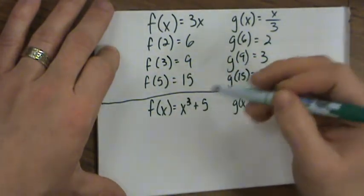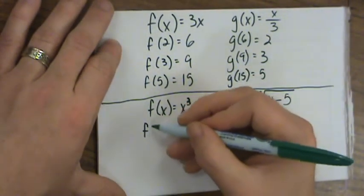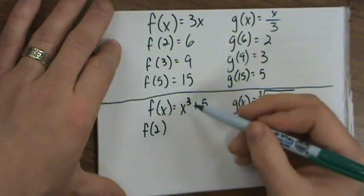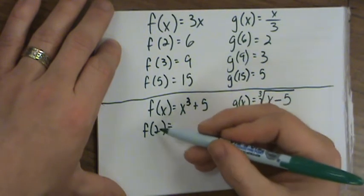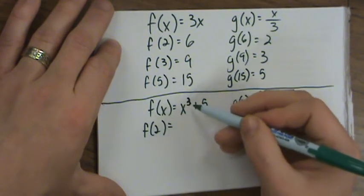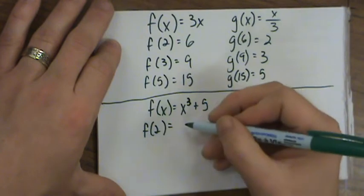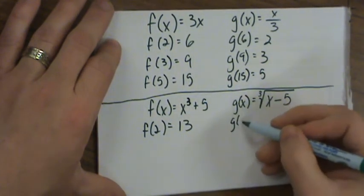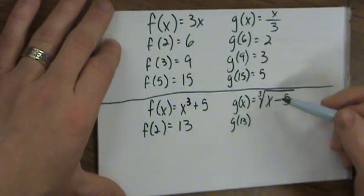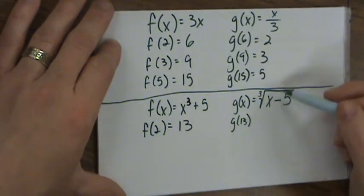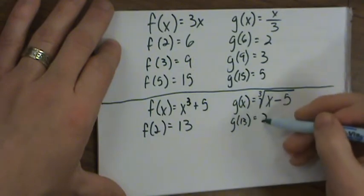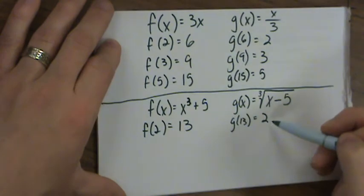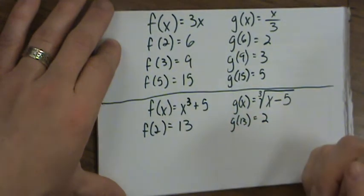Now a second example: f of x equals x cubed plus 5, and g of x equals the cube root of (x minus 5). f of 2 is 2 cubed plus 5, which is 8 plus 5, equals 13. Now g of 13 is the cube root of (13 minus 5), which is the cube root of 8, which equals 2. Two went in and 2 came back out.